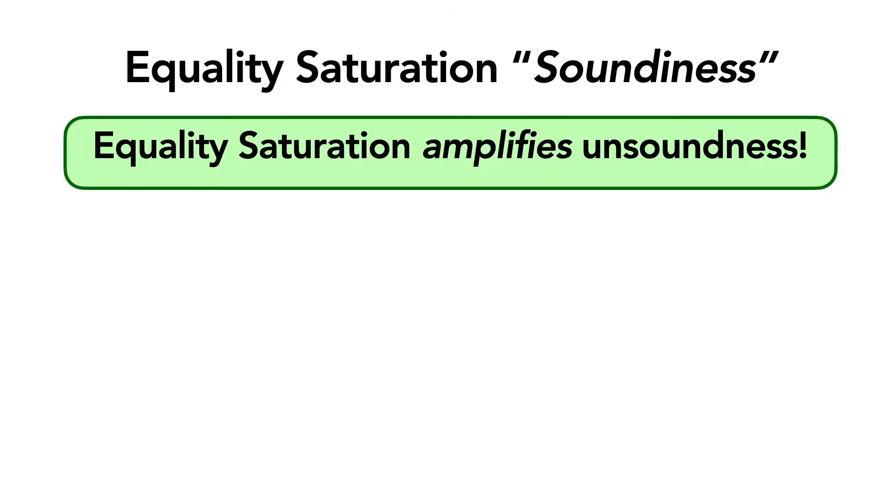Now I want to briefly discuss a very interesting phenomenon that we encountered which we call equality saturation soundiness. Note that we call it soundiness because it's not a formal guarantee, but we found it to be really useful for investigating the rule sets produced by Ruler and also for debugging. So the idea here is that equality saturation tends to amplify unsoundness, which then we can use to detect if any unsound rules are present in the rule set.